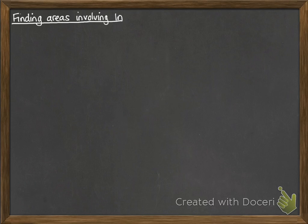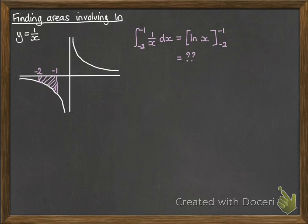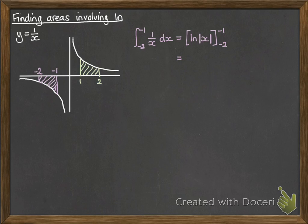Now when you're finding areas involving ln, there are a couple of things to bear in mind. If you consider the graph of y equals 1 over x and you wanted to find the area between x equals minus 2 and minus 1, you'd integrate 1 over x — which integrates to ln x. But you can't do ln of minus 1 or ln of minus 2, as they don't exist. What you can recognise is that by symmetry of the graph around the origin, that area is the same as the corresponding area between 1 and 2. The tidier way to handle this is using a modulus: ln of the modulus of x. You get an answer like minus 0.693 — the minus being because it's under the x-axis, which you're already used to recognising.